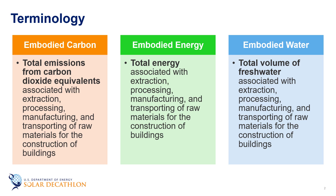The GWP is a measure of how much energy the emissions of one ton of gas will absorb over a given period of time relative to the emission of one ton of carbon dioxide. The larger the GWP, the more that a gas warms the earth compared to carbon dioxide over that time period, which is usually 20 or 100 years.